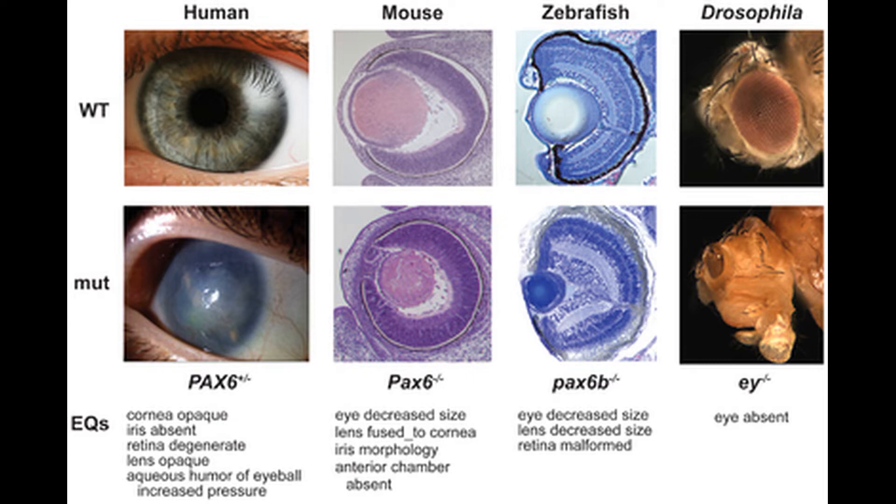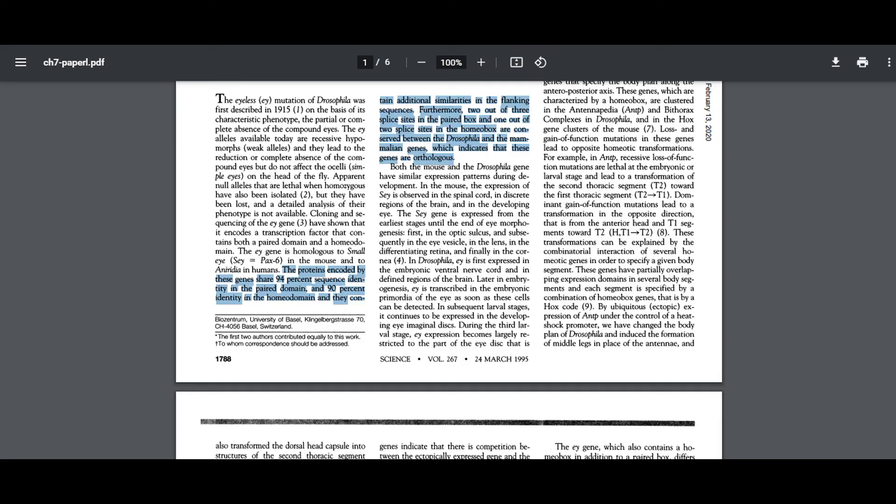Homologues of this gene have been identified in various bilaterians from mice to molluscs, and its other well-known name is PAX-6. Now, Eyeless shares a very high amount of sequence similarity with our homolog of it. According to that 1995 paper, quote, the proteins encoded by these genes share 94% sequence identity in the paired domain and 90% identity in the homeodomain, and they contain additional similarities in the flanking sequences.